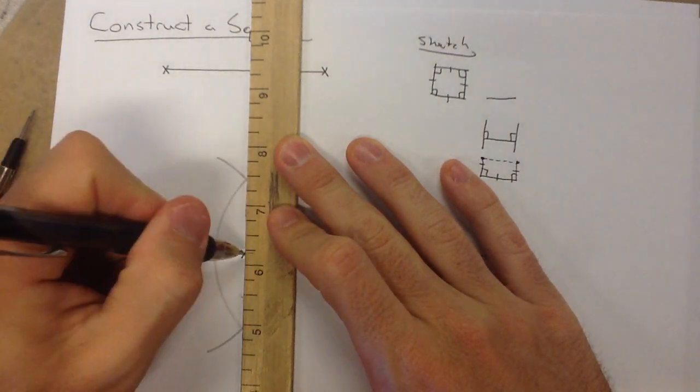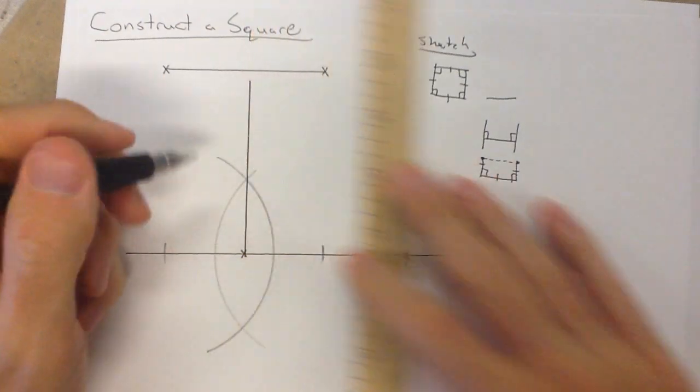This is going to now give me the line I need to draw for the perpendicular. Now, I don't need all of it down below the line. I'm going to go above. So there is my first line.